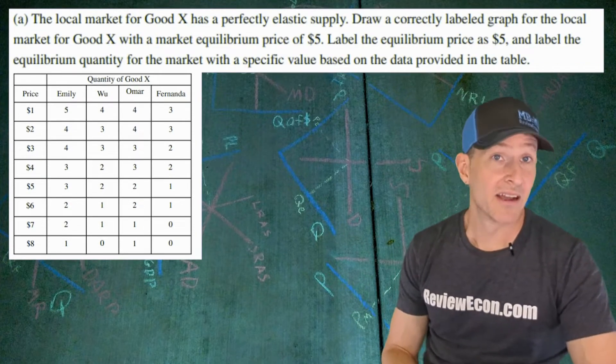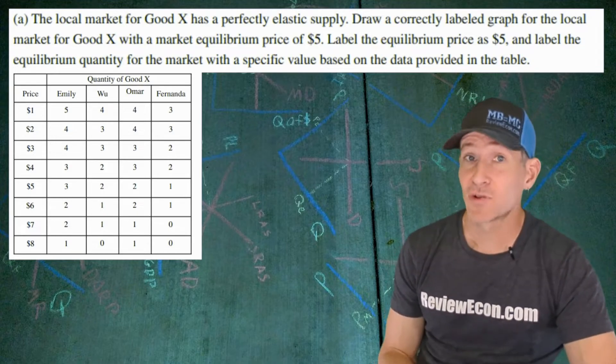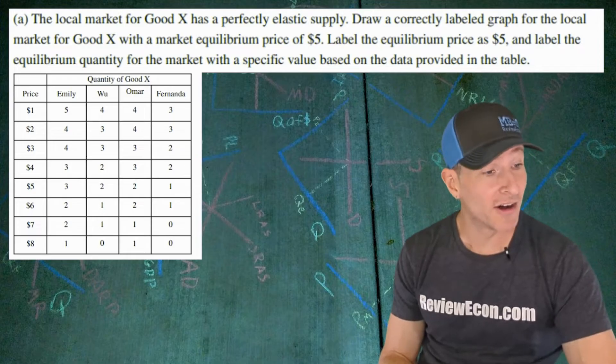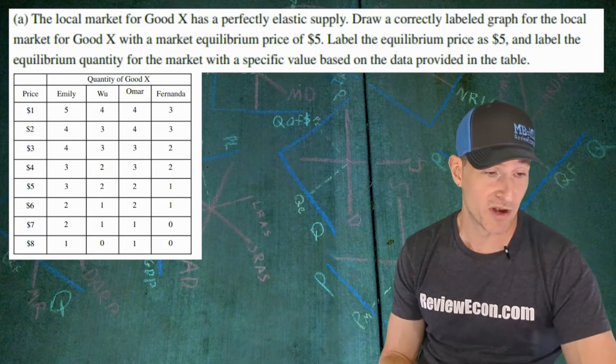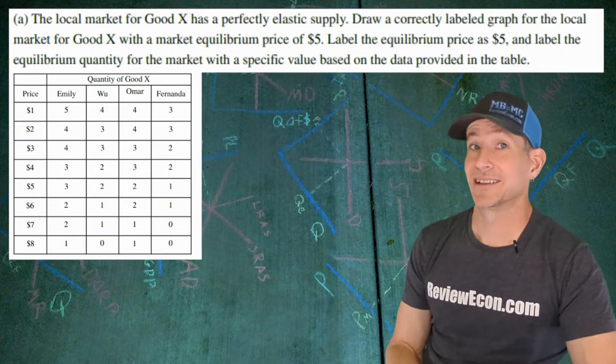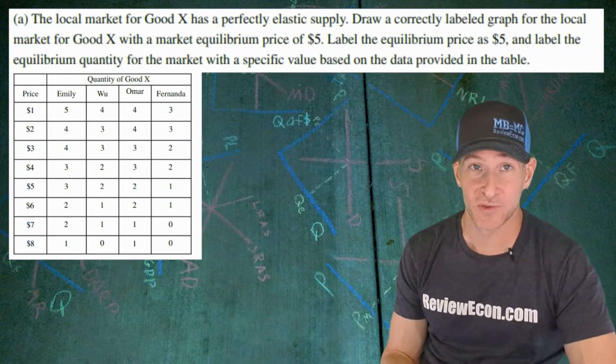For part A, they tell us that the supply curve for this market is going to be perfectly elastic. That means it's horizontal, and we're going to have to draw a correctly labeled graph of the local market for good X, and the equilibrium price is going to be $5.